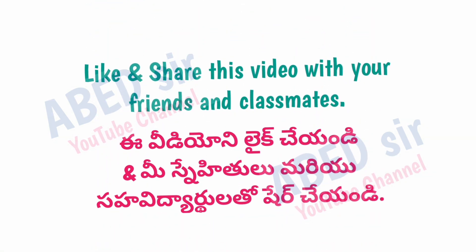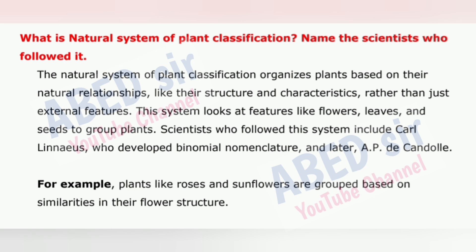Next important question: What is the natural system of plant classification? Name the scientists who followed it. The natural system of plant classification organizes plants based on their natural relationships, like their structure and characteristics, rather than just external features. This system looks at features like flowers, leaves, and seeds to group plants. Scientists who followed this system include Carl Linnaeus, who developed binomial nomenclature, and later APD Candor. For example, plants like roses and sunflowers are grouped based on similarities in their flower structure.